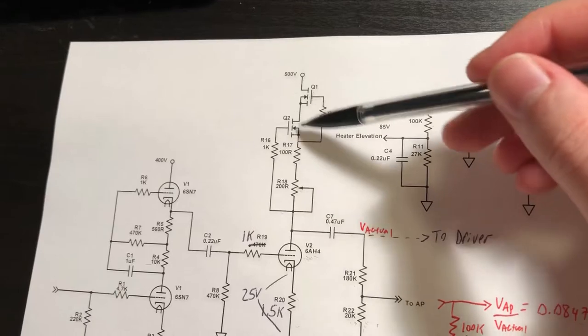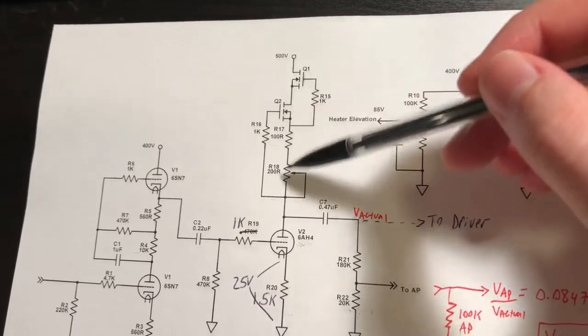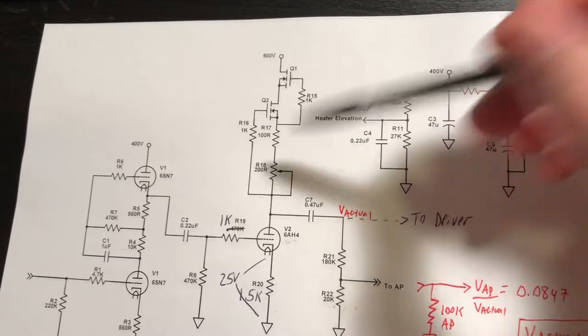So the Q2 is not dropping a lot of voltage, it's really just helping maintain and set the current operating point.